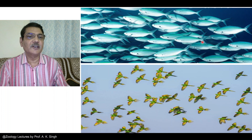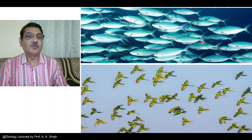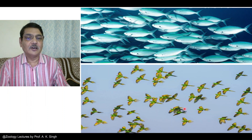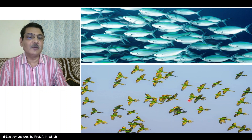Mendelian population is not different from simply the term population. But when we refer to Mendelian population, it mainly refers to a sexually reproducing population that is deployed in nature. In the lower diagram, you can see parrots that are capable to interbreed among themselves, forming a common gene pool. This applies to every sexually reproducing population.